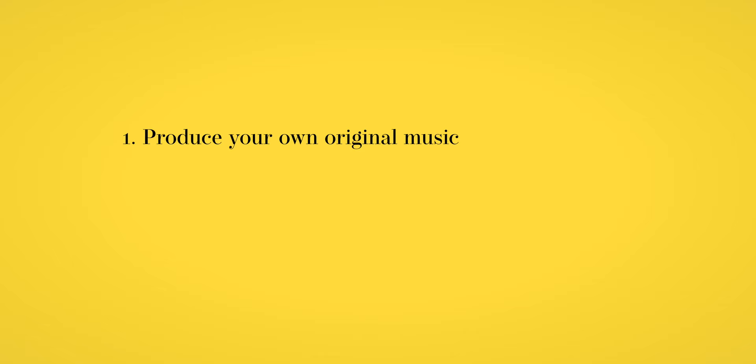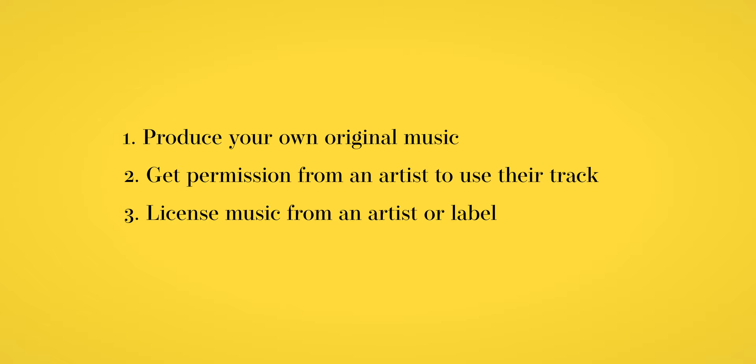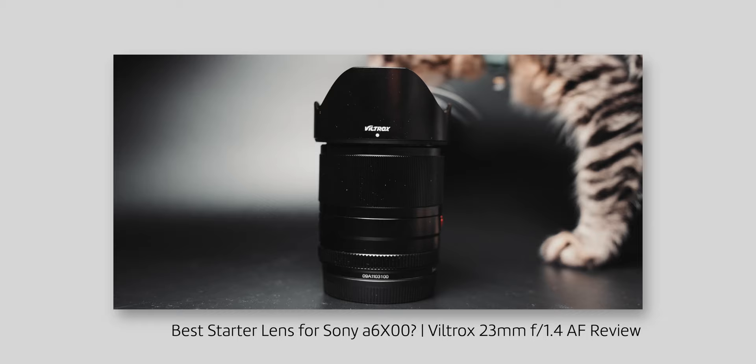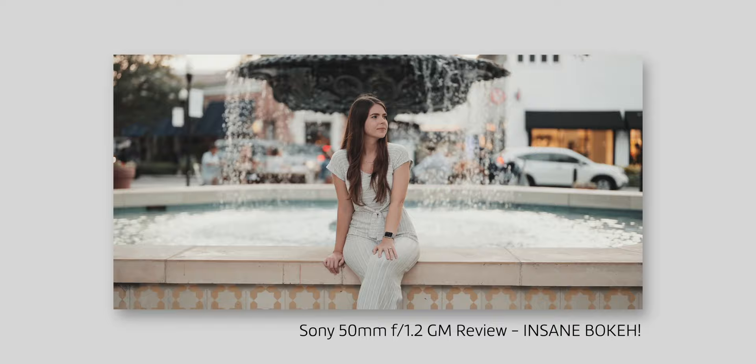To get around this issue when producing your videos, you have a few options. One, you can produce your own original music. Two, you can get written permission from someone to use their music. Or three, you can purchase a license to use music from someone else. I'm assuming you're watching this because you're curious about how that third option works. In the past — and it's still an option today — you can find sites that let you pay to license a single track. Many years ago when I was trying to make a short film, getting the rights to a single song was at least a few hundred dollars. If you're a content creator making a bunch of videos or editing dozens of wedding videos each year, that's going to get expensive really fast.